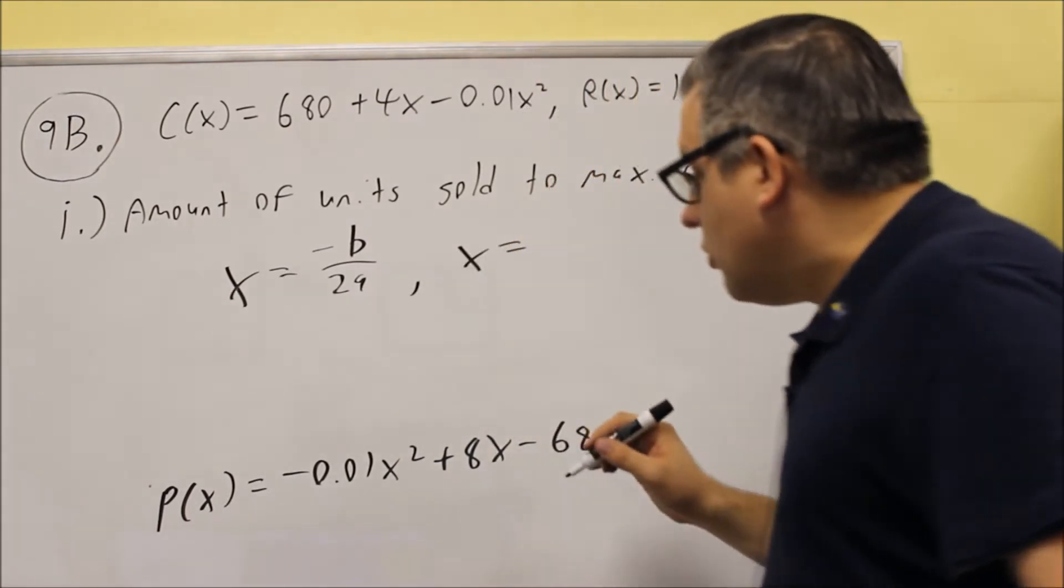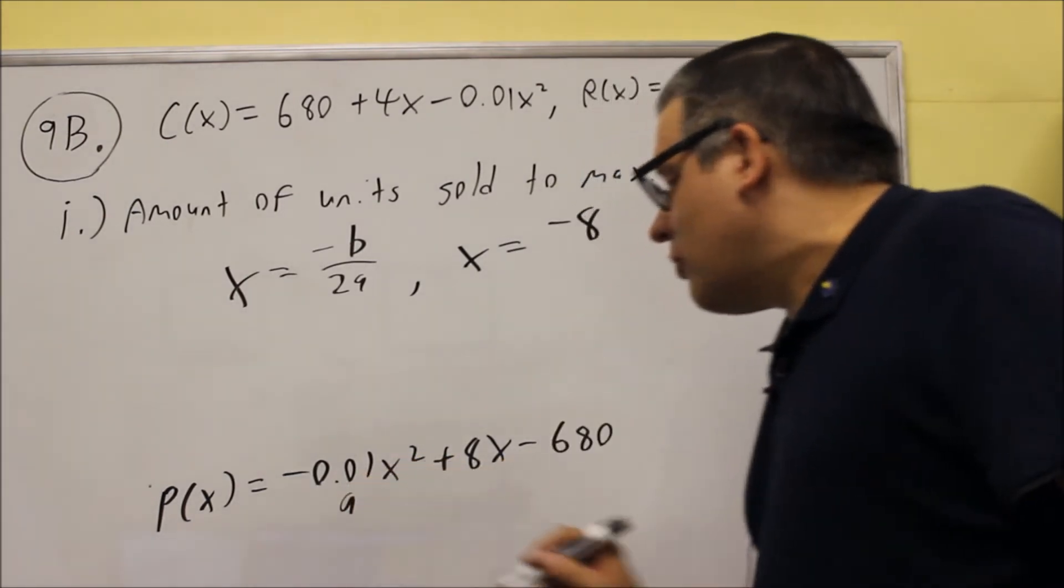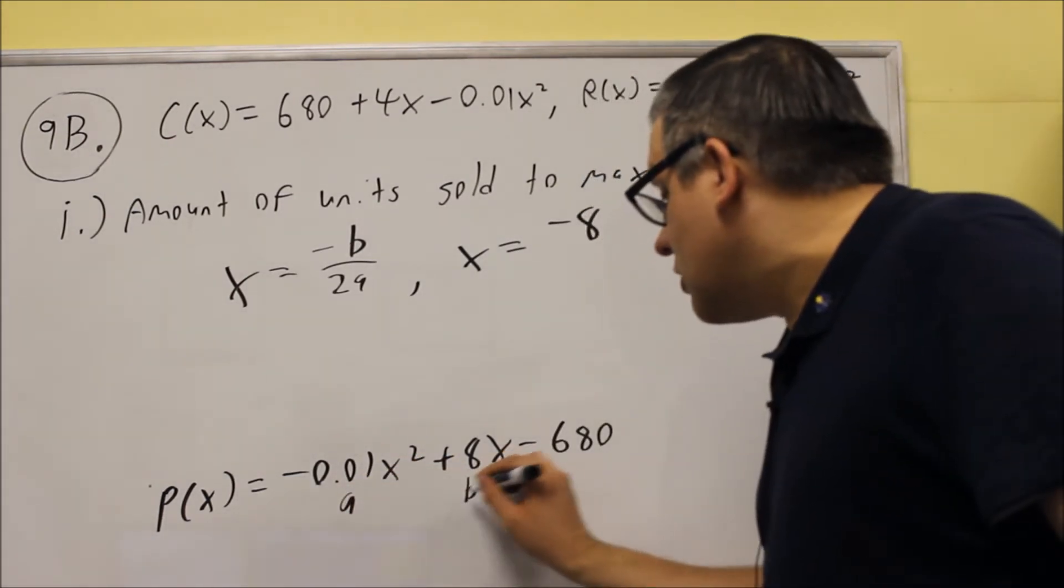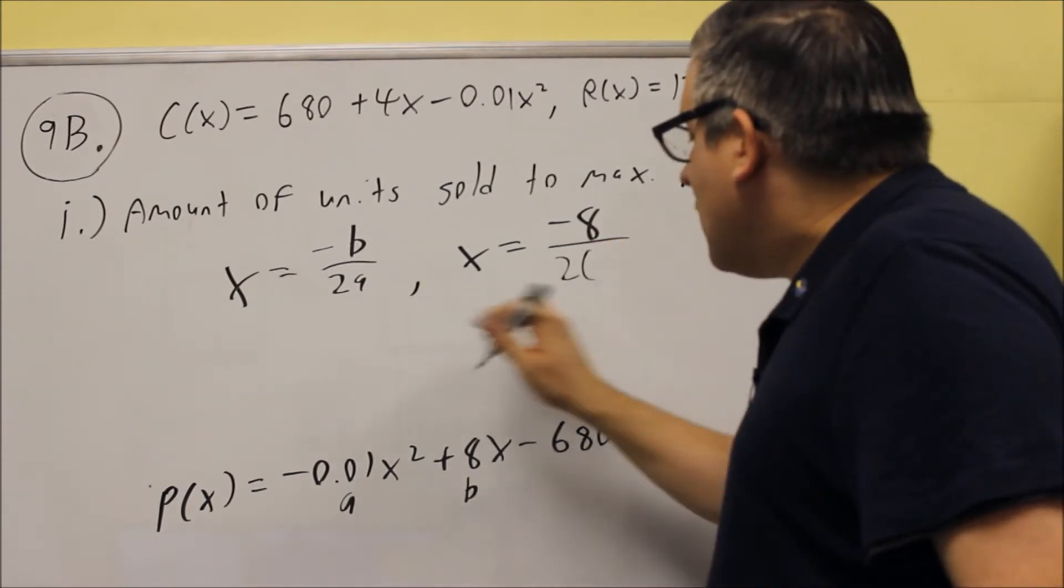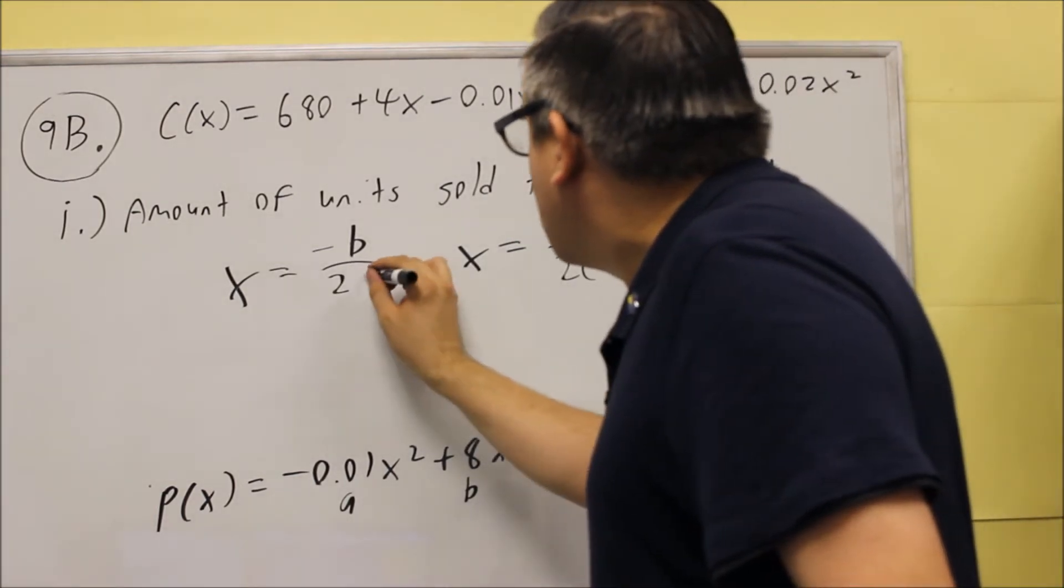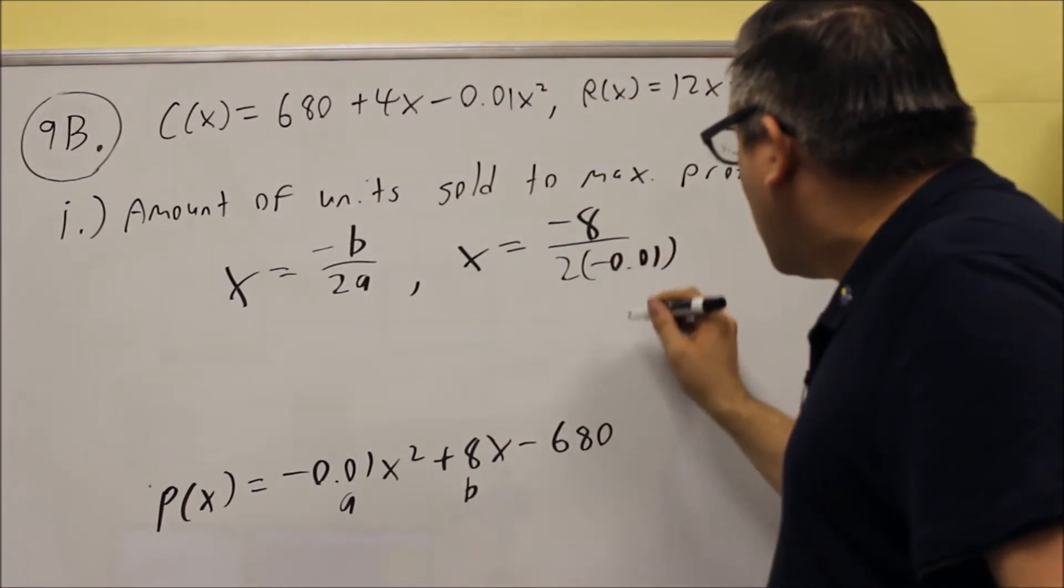Your x is equal to negative 8, that's your b, your a is negative 0.01, your b is 8. So we put negative 8 in there, 2 times a, which is what this is. 2 times negative 0.01, we have down below.